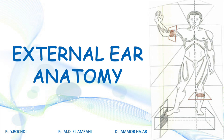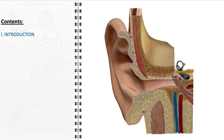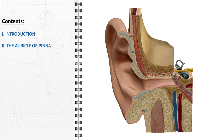In this video, we will delve into the intricate anatomy of the external ear, a remarkable and often overlooked component of the human auditory system. After a brief introduction, we will begin by examining the auricle, or pinna, the most visible part of the external ear.